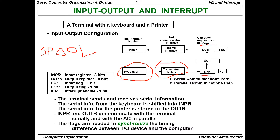So what exactly happens here? The information given through a keyboard — whatever keys we press — that information is given to the transmitter interface. From the transmitter interface, it is given to INPR. You can see two arrow marks here: the first one is a single arrow mark, which is nothing but the serial communication path, and a double arrow mark, which is nothing but the parallel communication path. The parallel communication path goes from INPR to accumulator to OUTR.